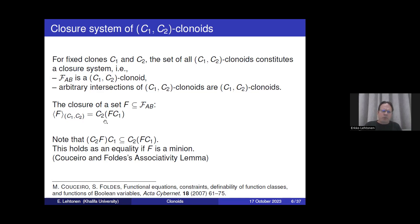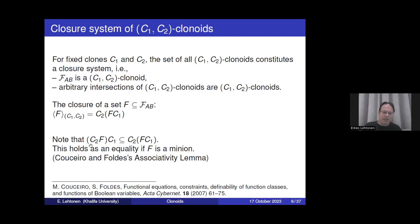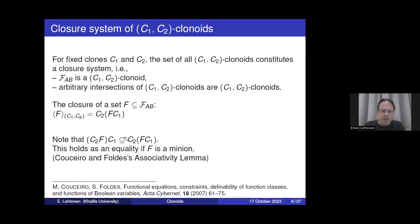It is important that we put the brackets in this way, because the composition of function classes is not associative, as was shown by Couceiro and Foldes. Furthermore, they showed that this inclusion always holds: if we put the brackets on the left, this set will be contained in the set composition when we put the brackets on the right. This inclusion holds as an equality if the set F in the middle is a minion or minor-closed set — the so-called associativity lemma of Couceiro and Foldes.